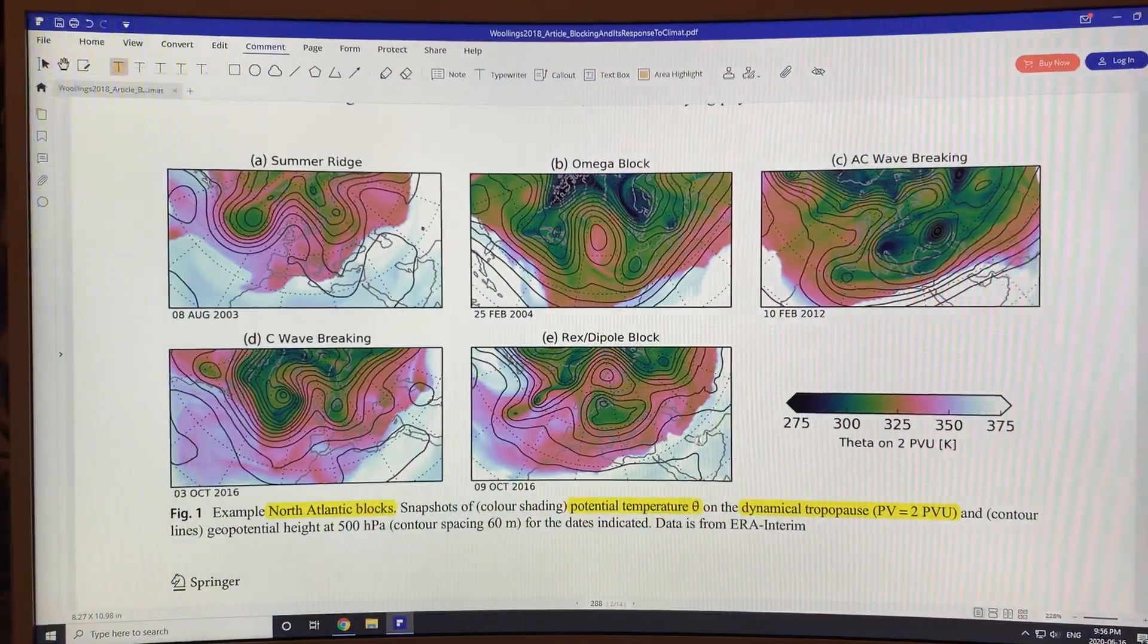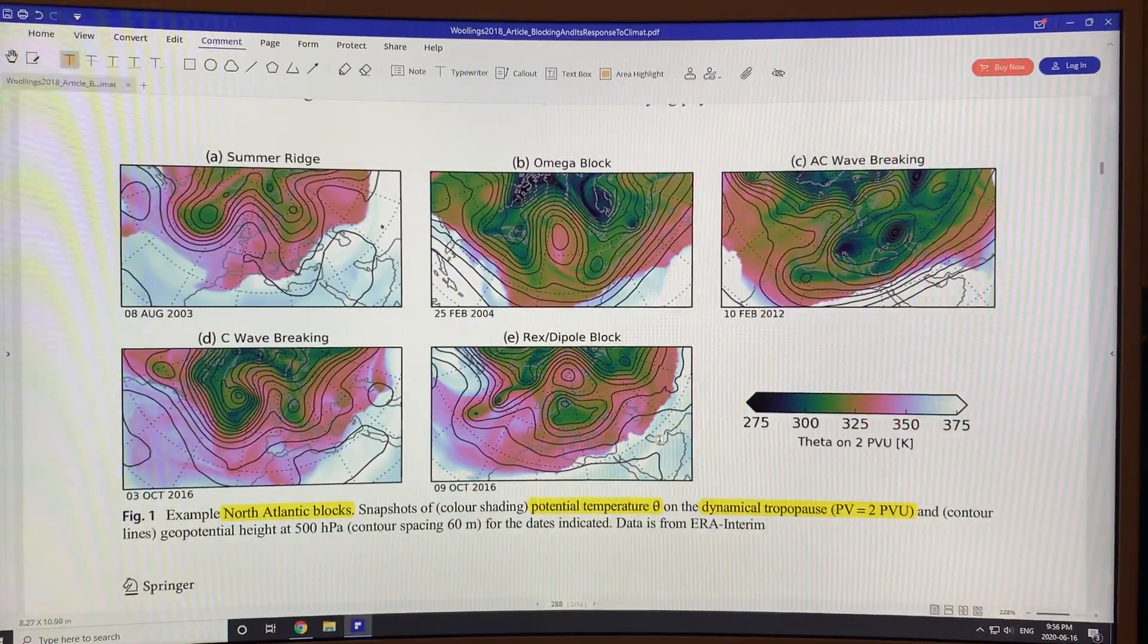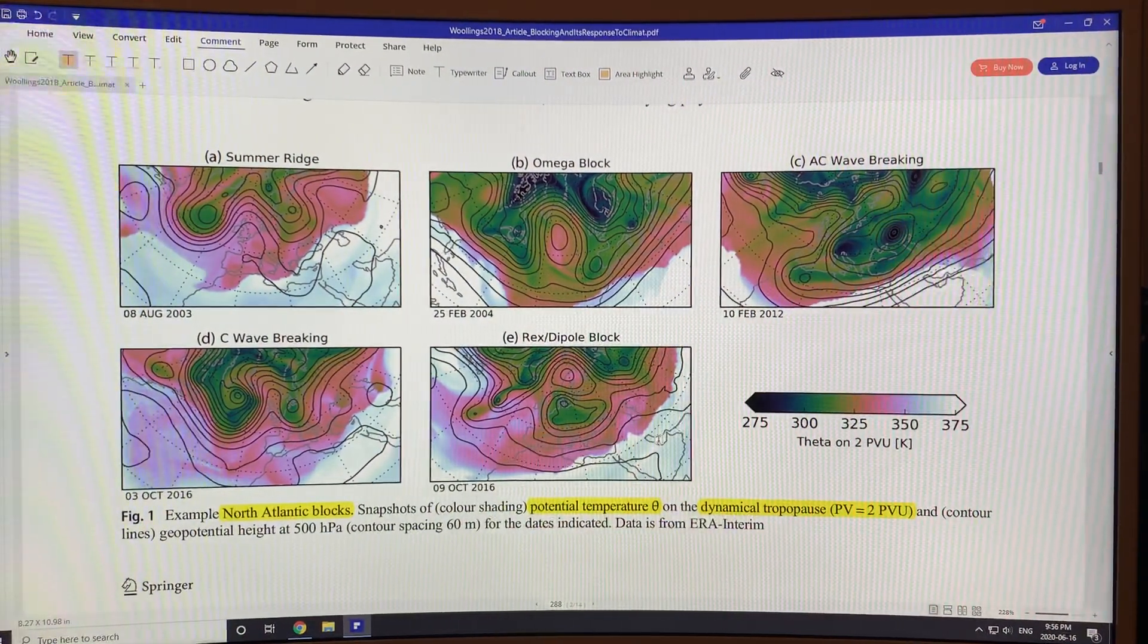Shackleton is nowhere to be seen and I tried to get Ma but he's even more elusive than Shackleton. So I'm going to continue discussing the latest science on blocking and how we expect blocking to change as rapid climate change proceeds.